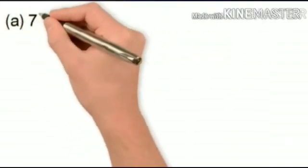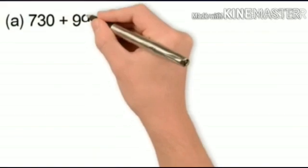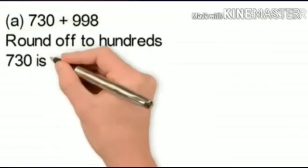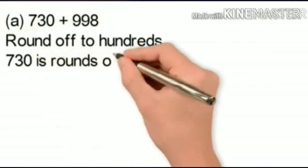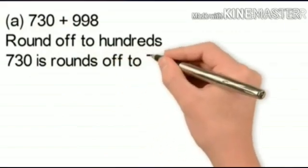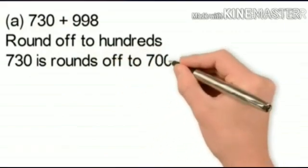Let us estimate the sum of 730 and 998, rounded off to hundreds. 730 lies in between 700 and 800. Since 730 is nearer to 700, it is rounded off to 700.